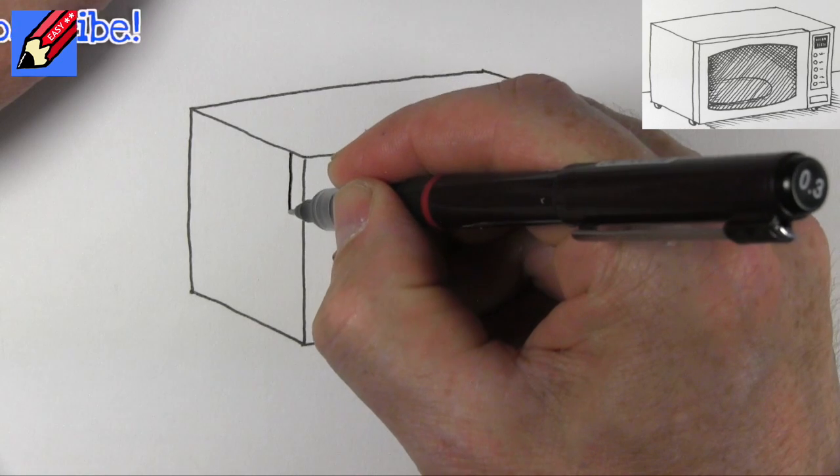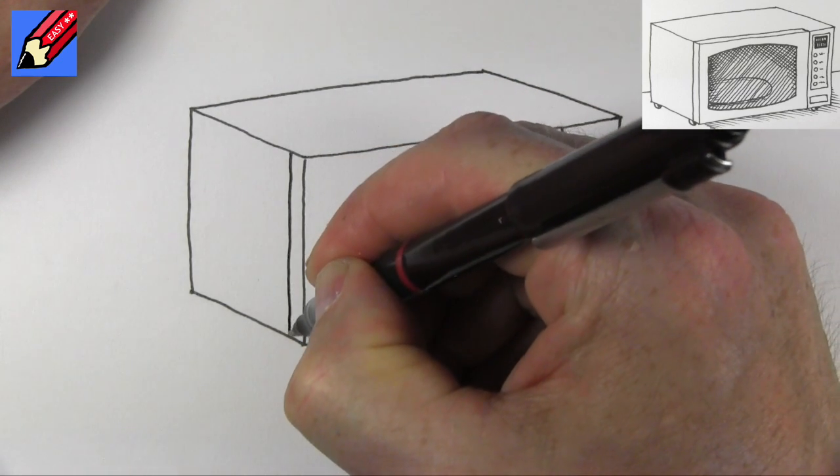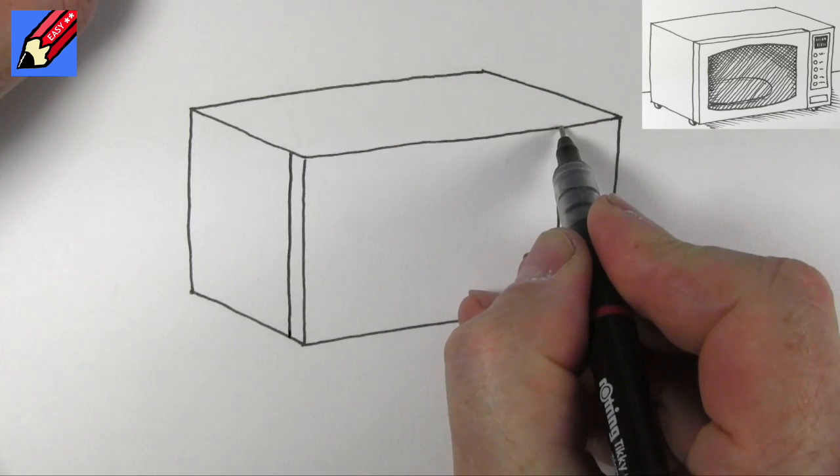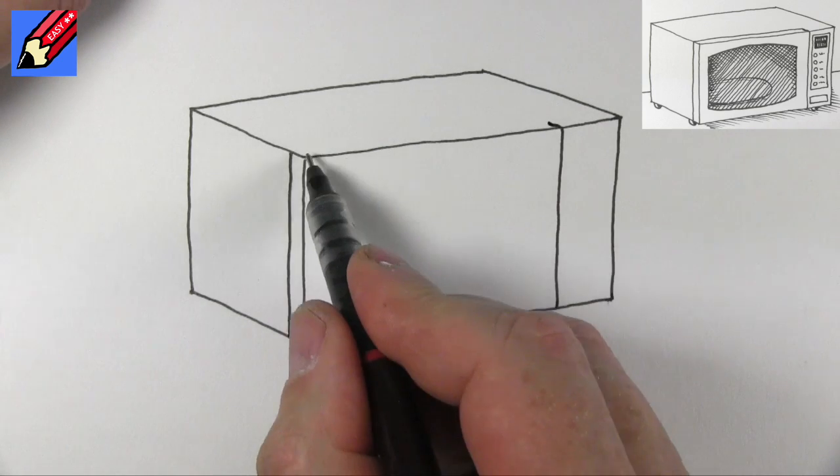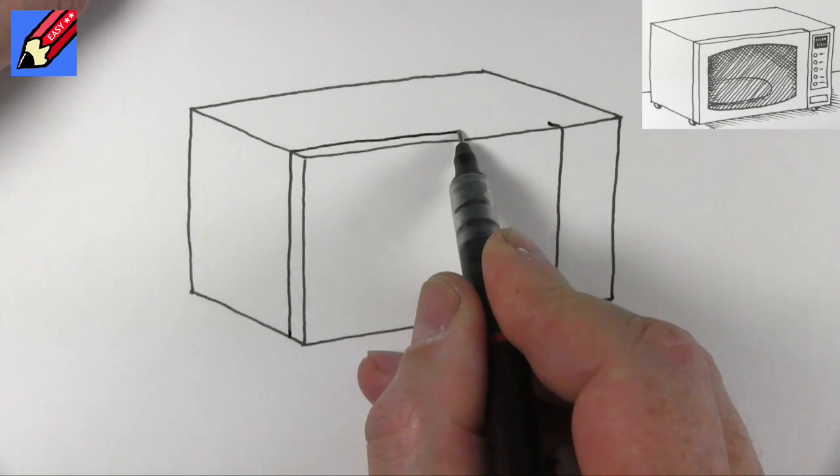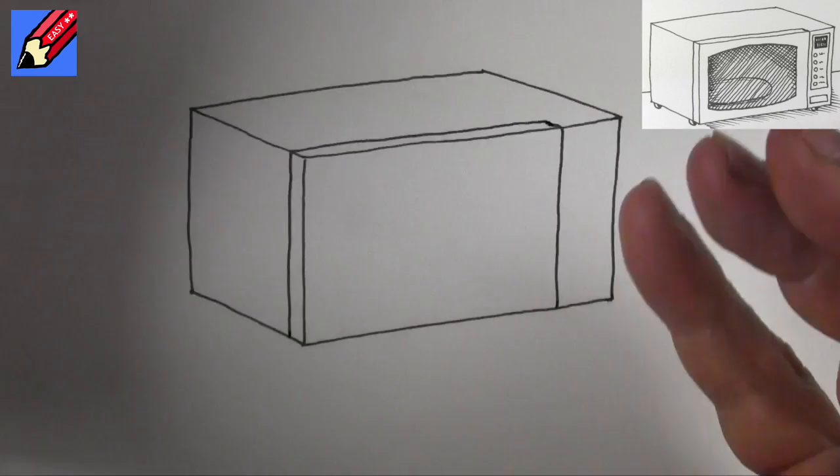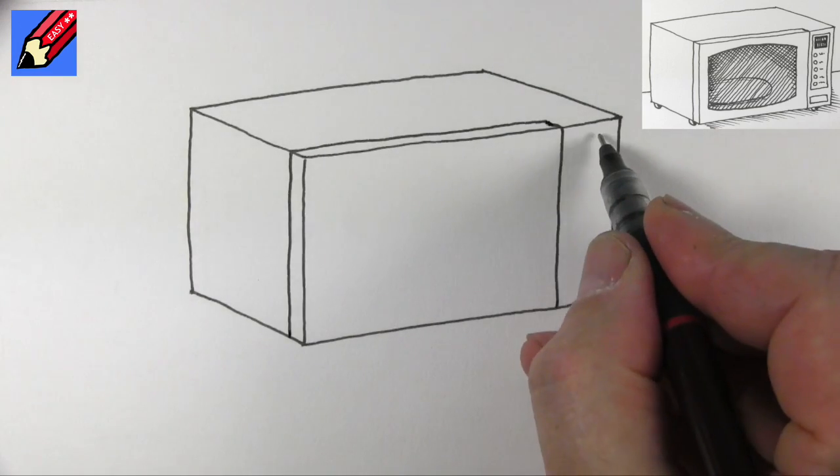The door on this side comes down there and this is going to come back that little way. Then we'll draw a line across there to connect up, so that is the door.